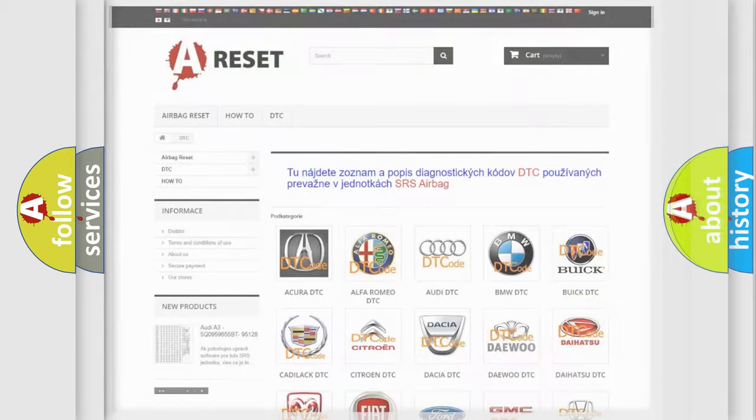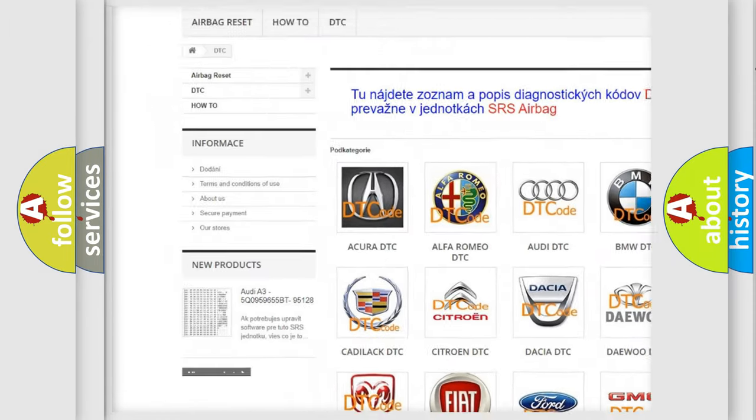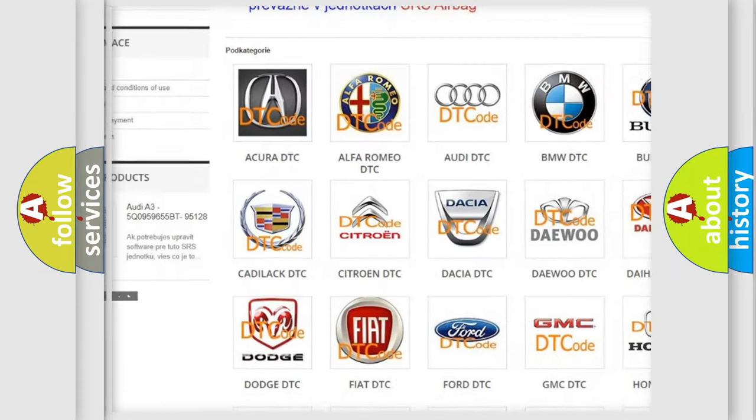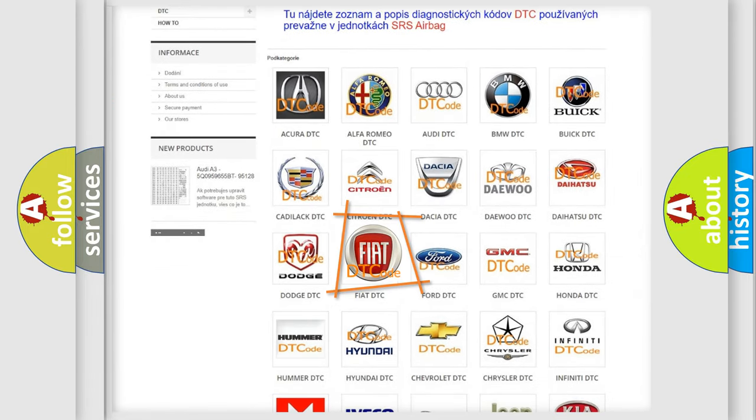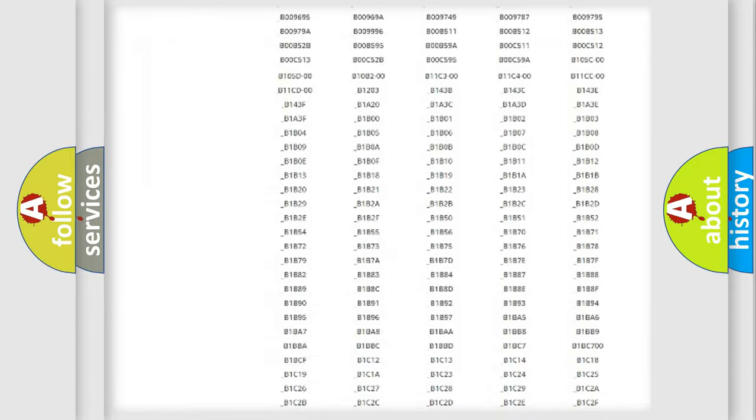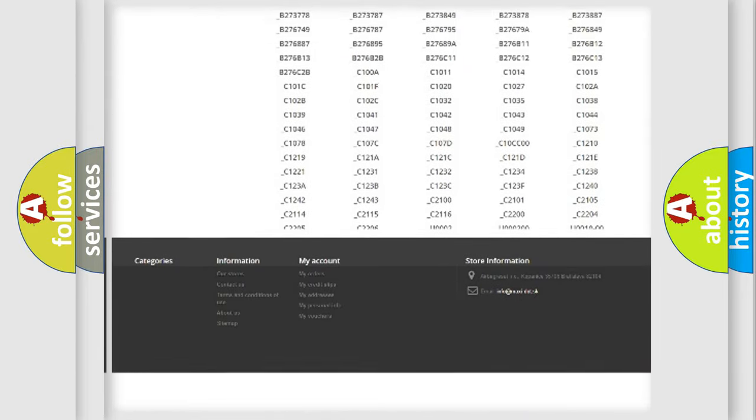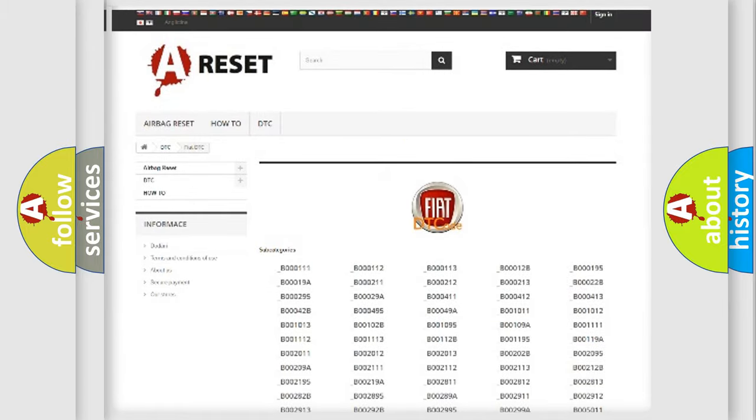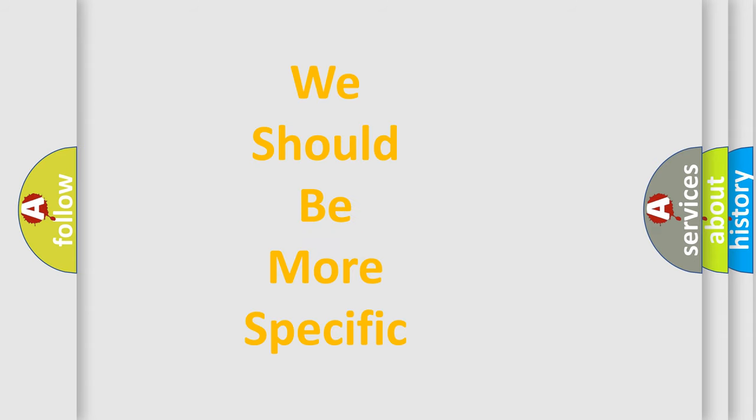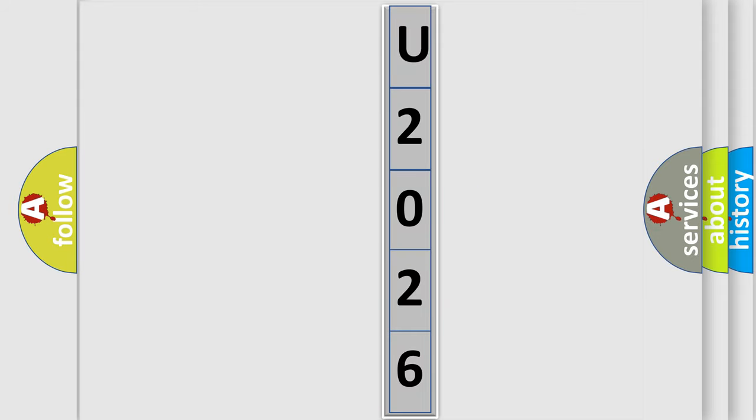Our website airbagreset.sk produces useful videos for you. You do not have to go through the OBD2 protocol anymore to know how to troubleshoot any car breakdown. You will find all the diagnostic codes that can be diagnosed in FIAT vehicles, and many other useful things. The following demonstration will help you look into the world of software for car control units.